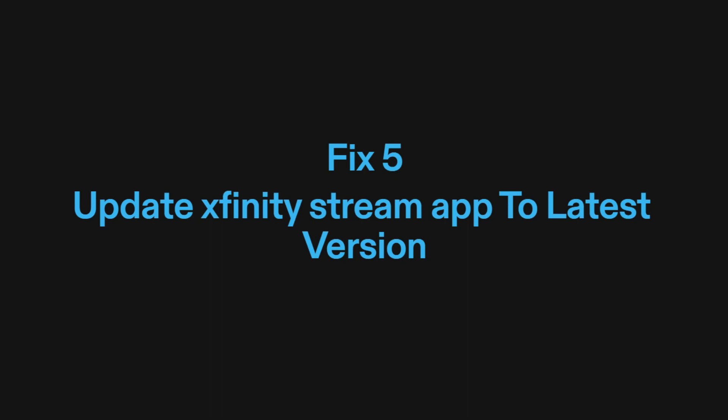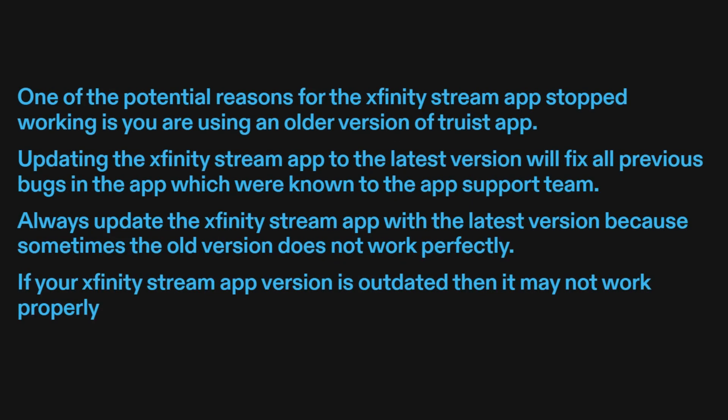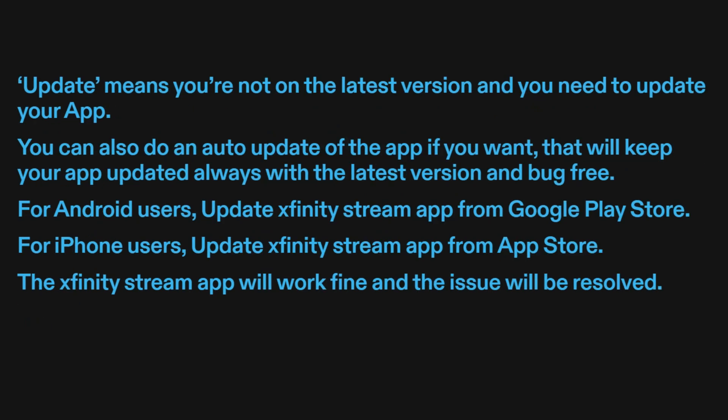Fix five: update the Xfinity Stream app to the latest version. One of the potential reasons for the Xfinity Stream app stopped working is you are using an older version of the app. Updating to the latest version will fix all previous known bugs. Always update the app because sometimes the old version does not work perfectly. You can also enable auto-update to keep your app updated and bug-free.